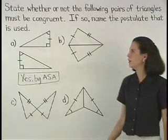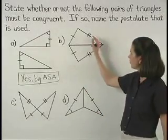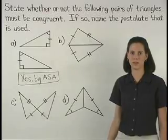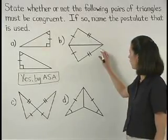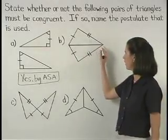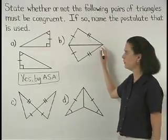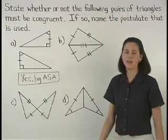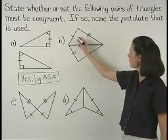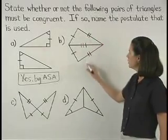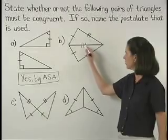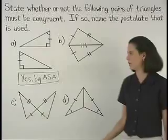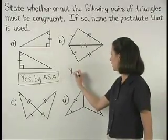In Part B, we only have two pairs of corresponding sides that are marked as congruent. But notice that these triangles share a third side, so we can mark this side as congruent to itself. Since we now have three sides of one triangle congruent to three sides of a second triangle, we can say that these triangles are congruent by side-side-side.